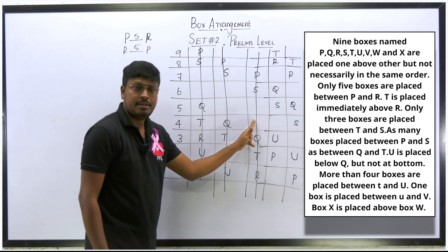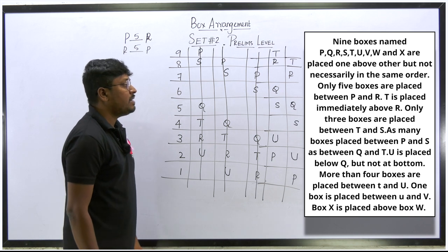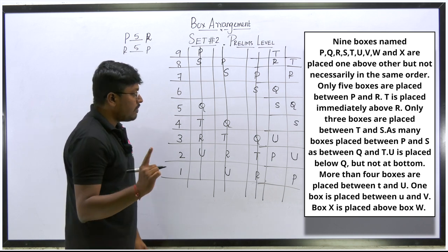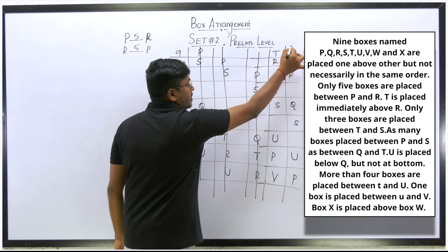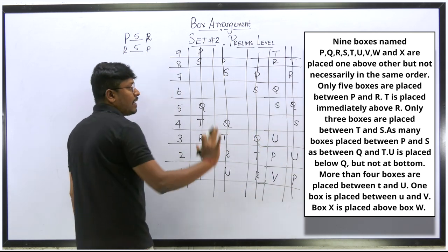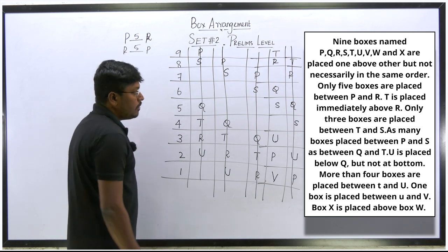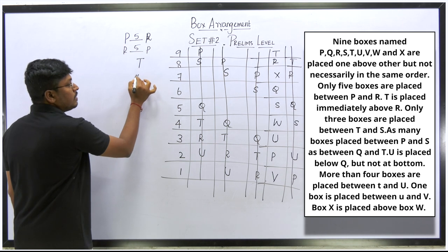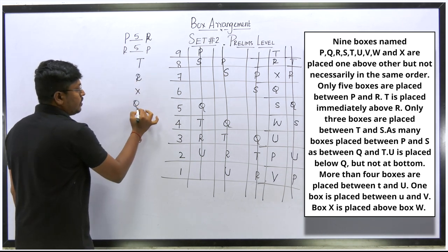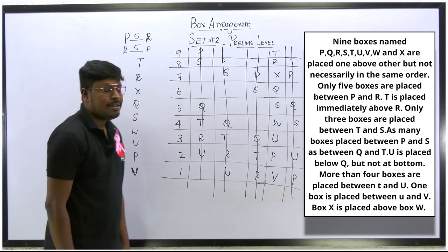Only one box is placed between U and V, so we fix V one position from U. One possible position satisfies this; the other does not, so we eliminate the last incorrect diagram. Finally, box X is placed above box W. With all clues applied, the final arrangement from top to bottom is: T, R, X, Q, S, W, U, P, and V.